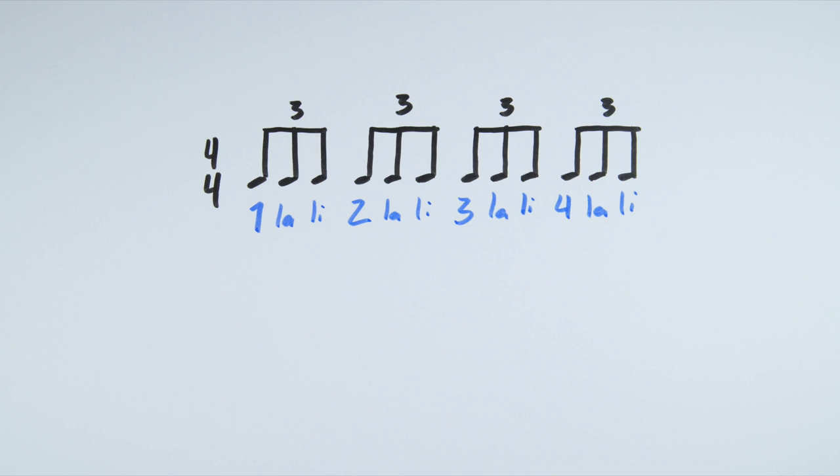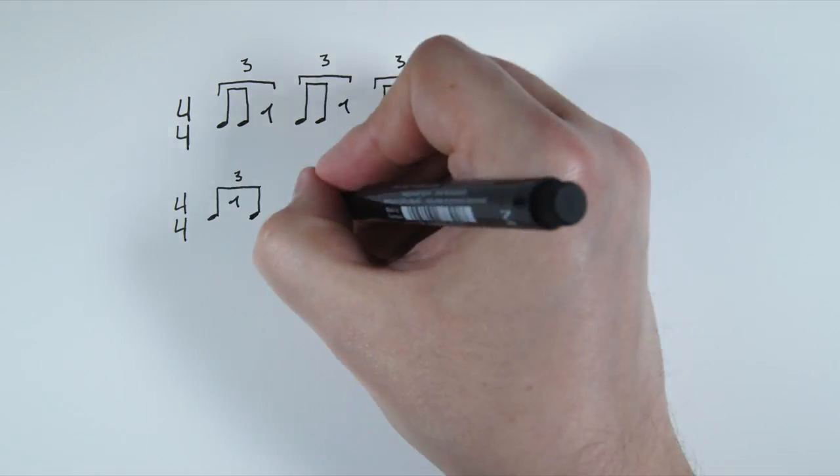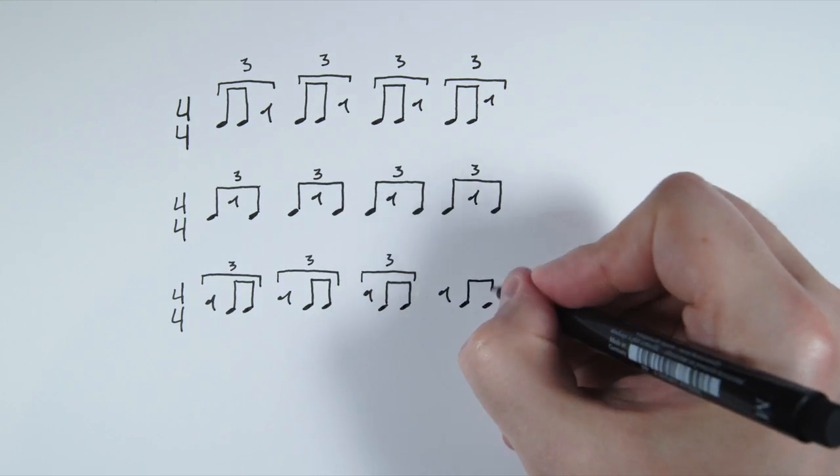1-lolly, 2-lolly, 3-lolly, 4-lolly. And since there are fewer notes in triplets, there are fewer combinations we can have. The most common are these three.